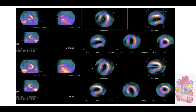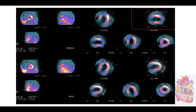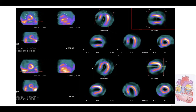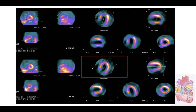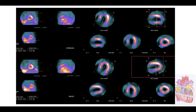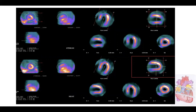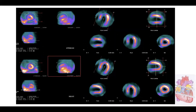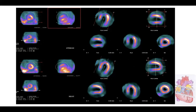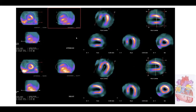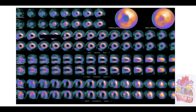We acquired stress first and then rest. It is very important to obtain the best realignment and we need to be sure that the alignment of the stress and rest tomographic data are completely the same, in order to obtain at the end very good quality images for visual and quantitative evaluation. It is really very important to ensure the heart is centered in the picture.